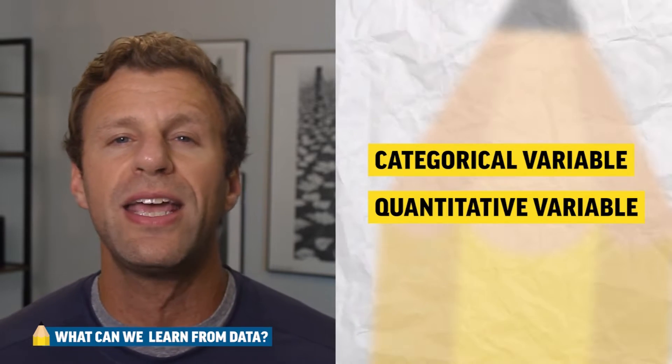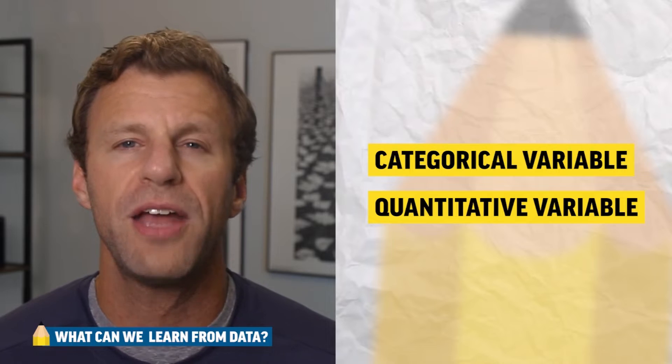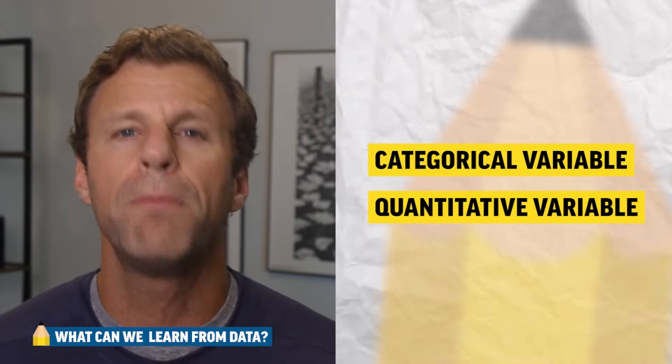Categorical data is way easier, way faster, way shorter — only a small percentage of this entire unit is even about categorical data. Much bigger part of the unit is over quantitative data. But regardless of categorical or quantitative variables, there's something really important you need to understand. Anytime you select a sample and from that sample you collect data, any summary information you learn from that sample data is called a statistic. Whereas if you collect data from an entire population, then anything you learn from that population is called a parameter. Statistics starts with an S and so do samples — statistics come from samples. Parameter starts with a P and parameters come from populations, which also start with a P.